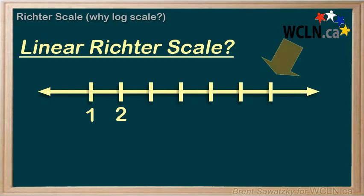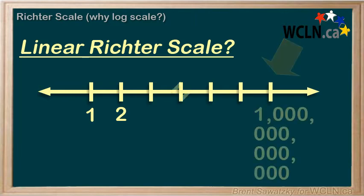But looking ahead at the top end of our scale, we have earthquakes that level second-tier cities. Those are on the order of a trillion times stronger than our minor local disturbance that we assigned a one. So we have a problem.